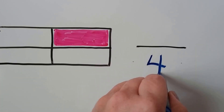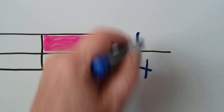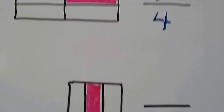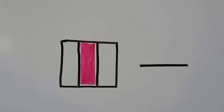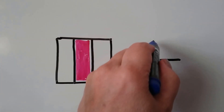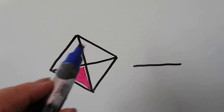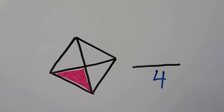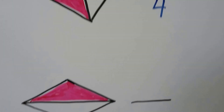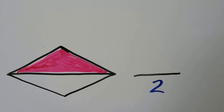Let's try this one. How many equal parts are there? One, two, three, four equal parts. How many are dark pink? Just one — one fourth of this rectangle is pink. That goes on the bottom: four. How many parts are pink? Just one — that goes on the top. That's one fourth. Now let's try this one — how many equal parts? One, two. How many parts are pink? Just one — that's one half.